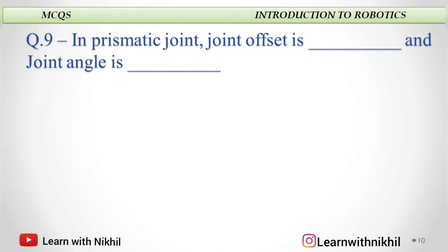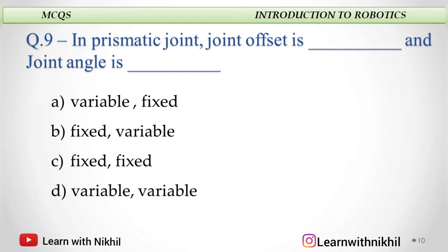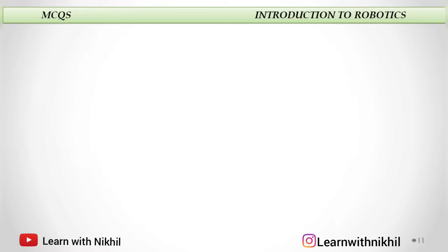Next question: In a prismatic joint, joint offset is dash and joint angle is dash. Is it variable-fixed, fixed-variable, fixed-fixed, or variable-variable? In a prismatic joint, joint offset is variable and joint angle is fixed.